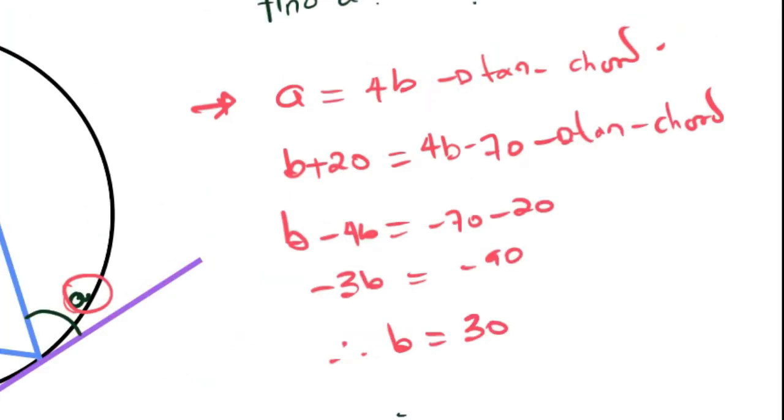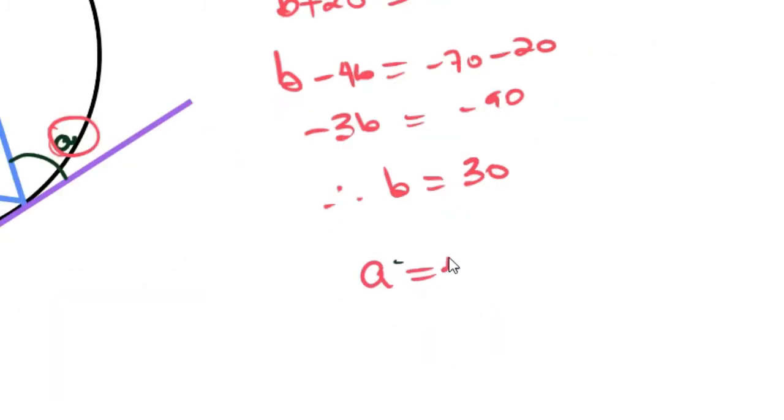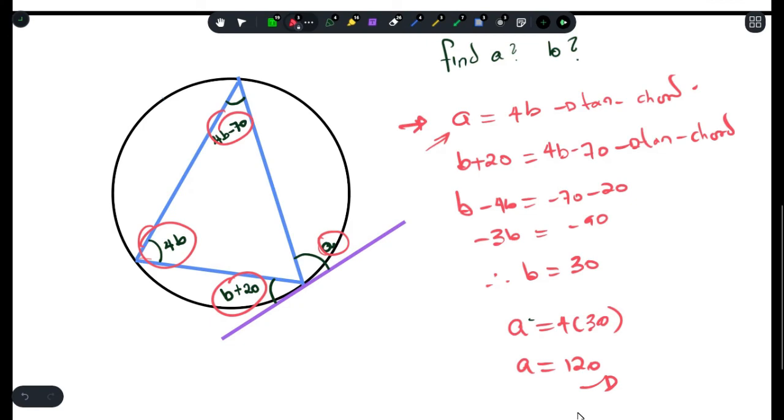So as you can see, we have the first answer as B is equal to 30. To get A, we can substitute B equals to 30 into this one that we have here. And that's it. Your answer is A equals to 120 and B is equal to 30.